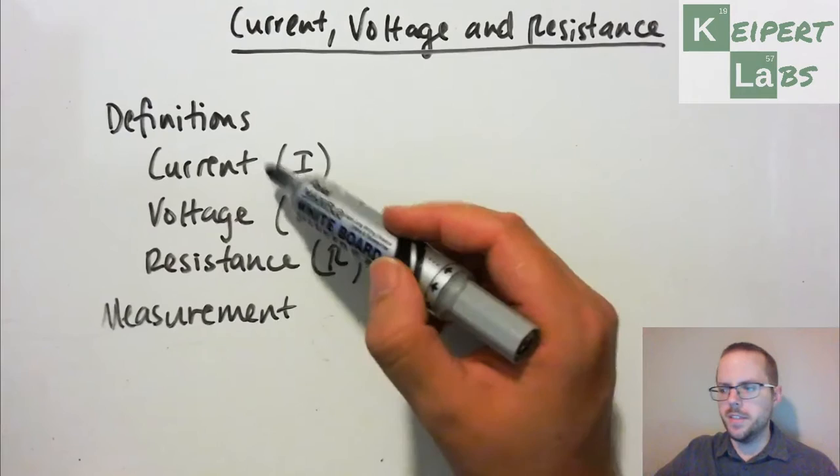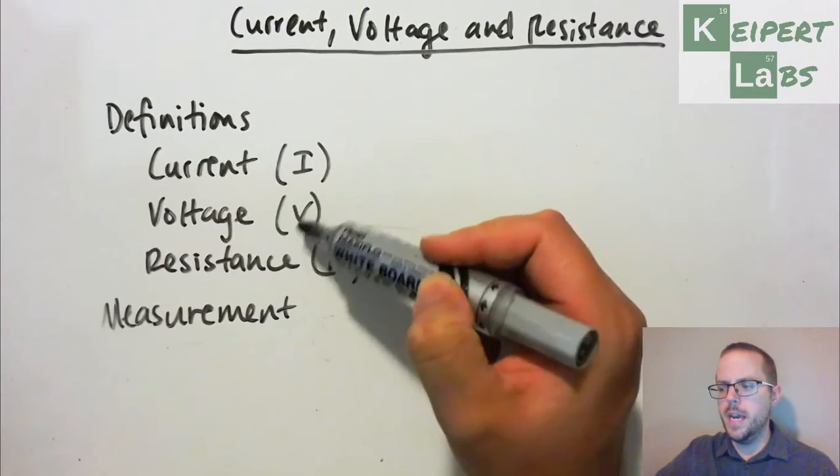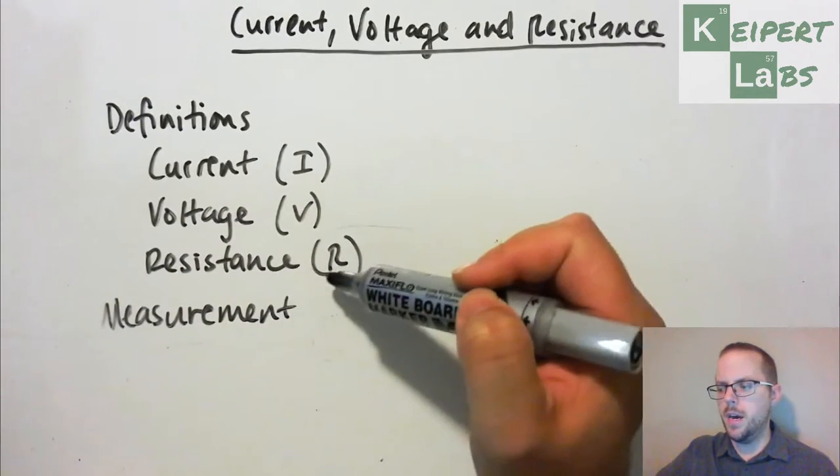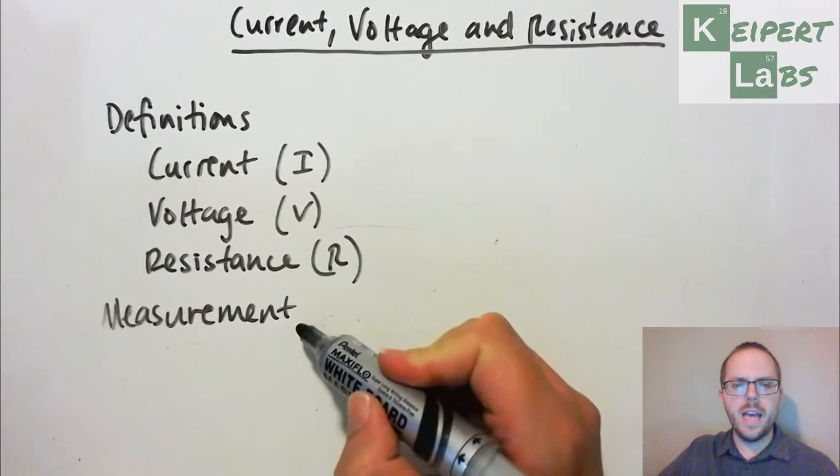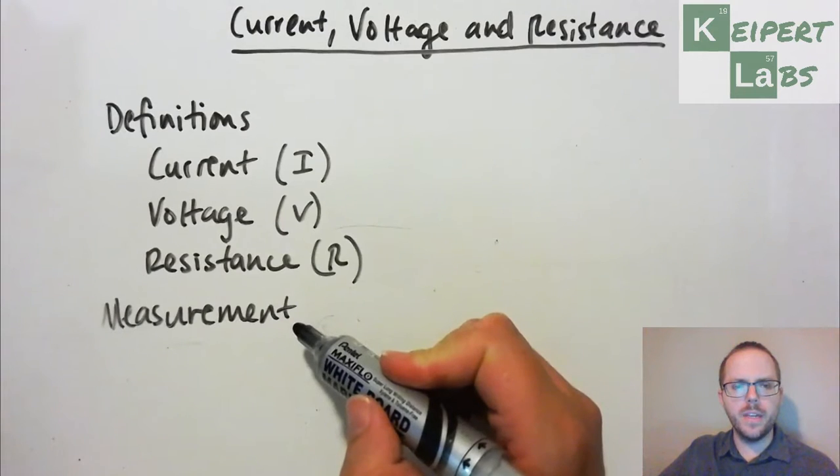We're going to spend some time doing some definitions for looking at each of these three terms. Current, which has the symbol of I, voltage has the symbol of V, and resistance with the symbol R. And then we're going to discuss how we can measure each one of these. So let's get into it.